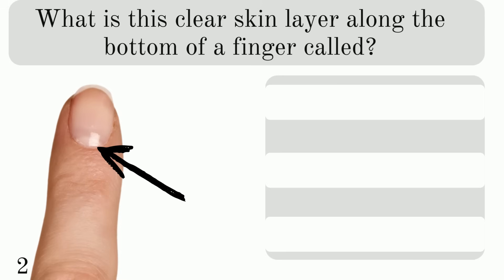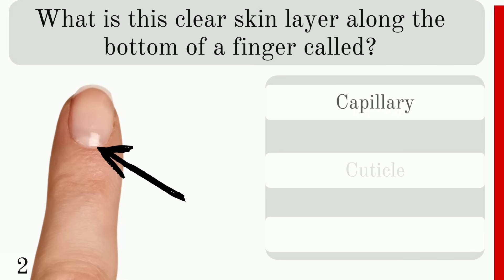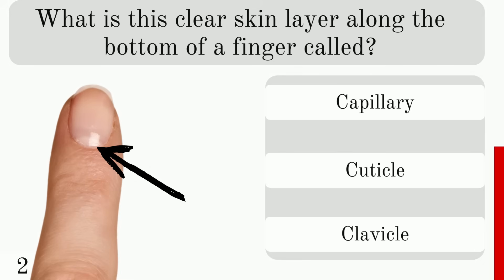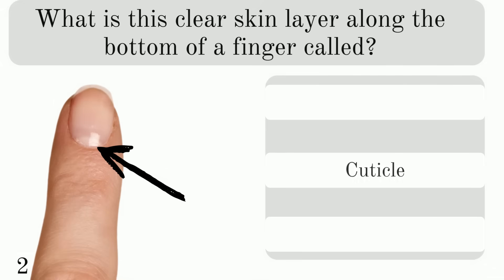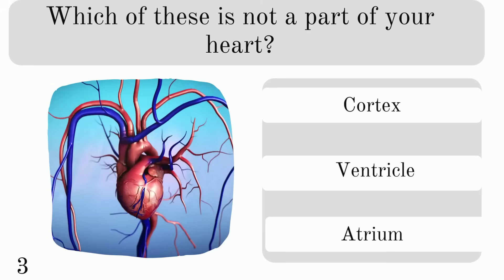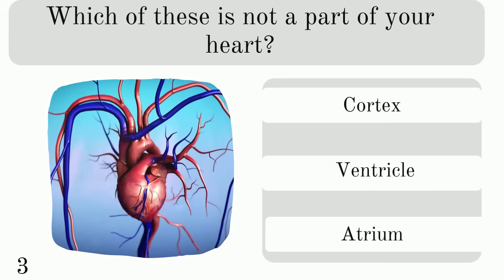What is this clear skin layer along the bottom of a finger called? Is it a capillary, cuticle, or clavicle? And it is a cuticle.